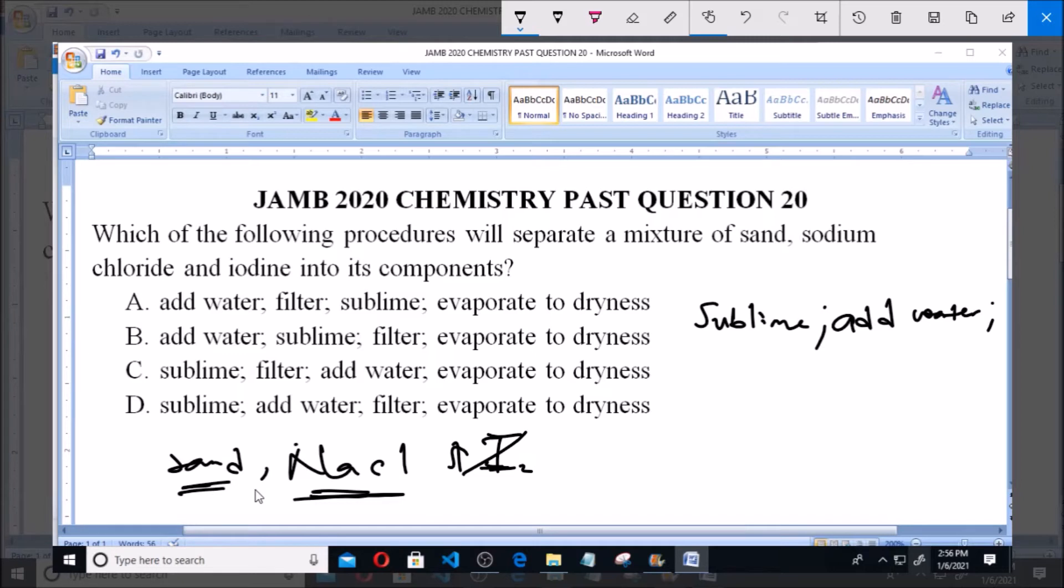Since sand is insoluble, the only way we can take out sand is by filtration. When you filter using filter paper, sand will be left out as residue while sodium chloride solution will be removed as filtrate. We've cancelled out sand as the residue from filtration. Sodium chloride is still in the solution - it's in the filtrate.